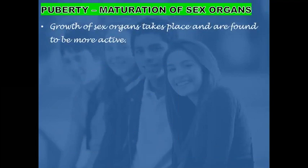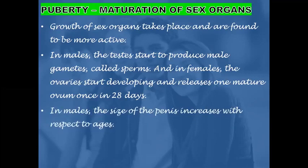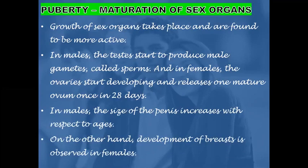Maturation of sex organs takes place during the stage of puberty. In males, the testes start to produce male gametes called sperms. In females, the ovaries start developing and release one mature ovum once in 28 days. In males, the size of the penis increases with age. In females, development of breasts is observed.